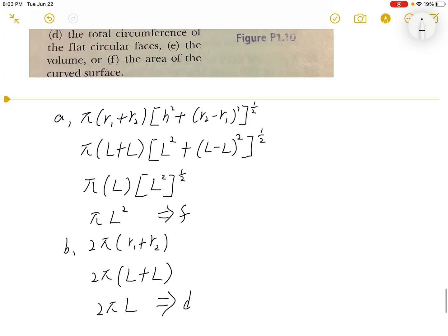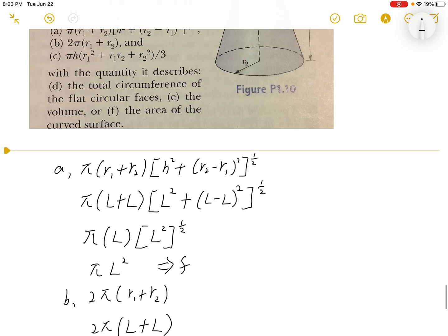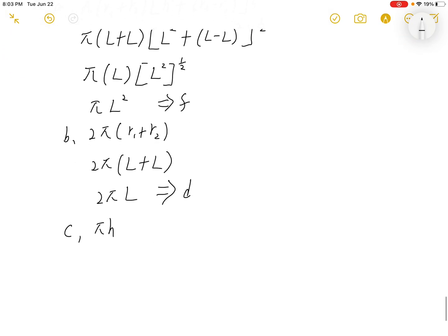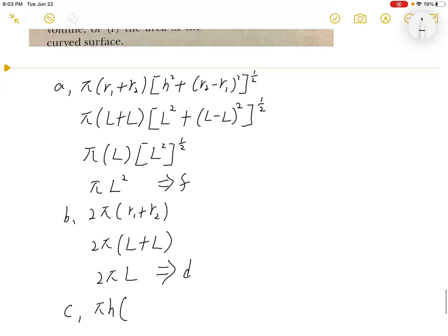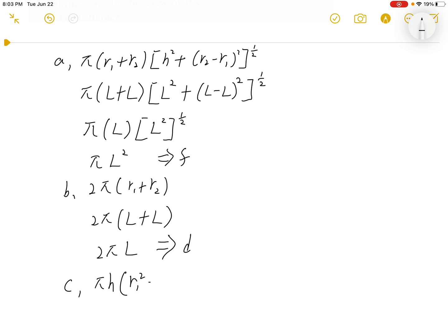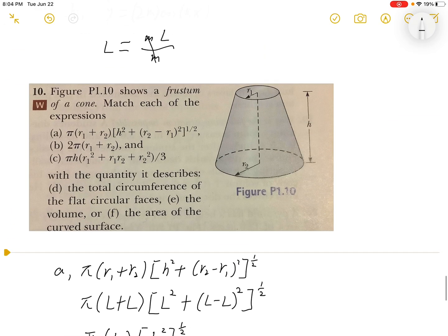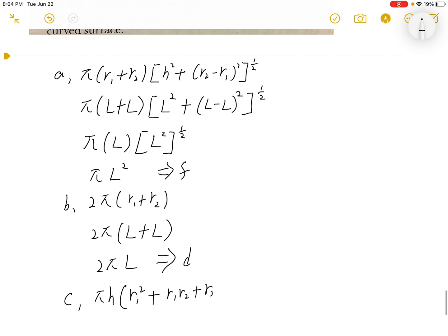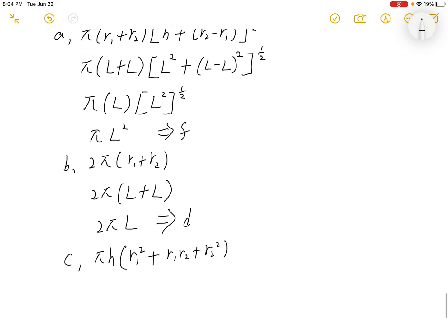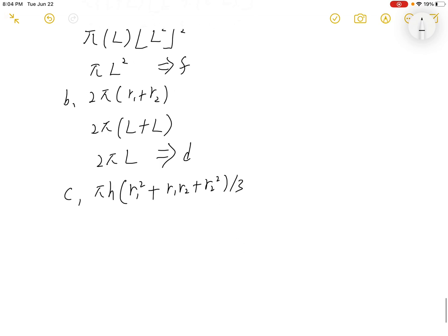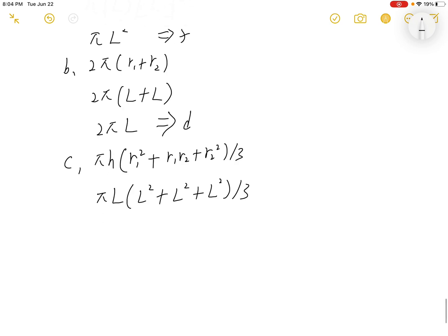For part C: πh(r₁² + r₁r₂ + r₂²)/3. Converting this to dimensions, we'll have π(L)(L² + L² + L²)/3. So we basically will have πL³/3.